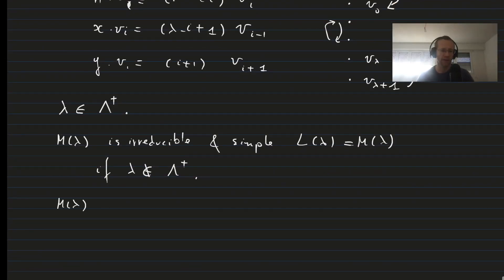Now, M of lambda has a maximal submodule. In fact, it's the only submodule. Which will be equal to M minus lambda minus 2, because it has weight lambda minus twice lambda plus 1. So it has a maximal submodule M minus lambda minus 2, which is again a Verma module, because it has this highest weight state V lambda plus 1, on which it is built.